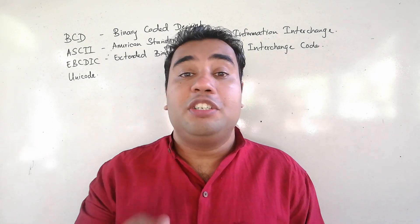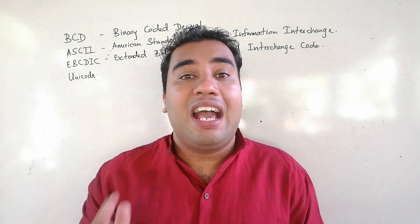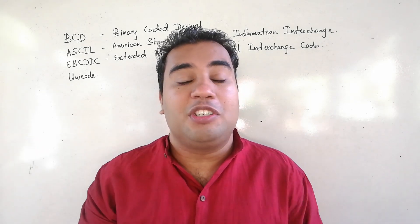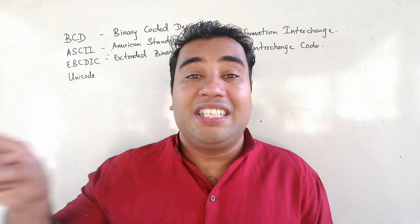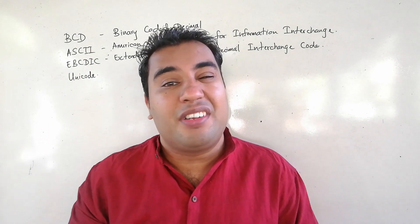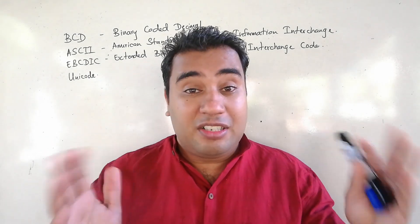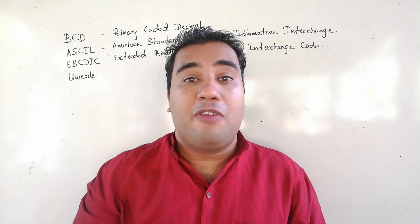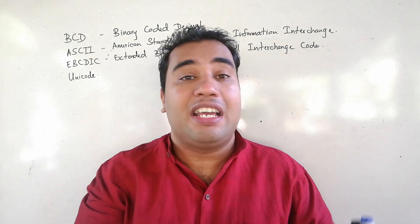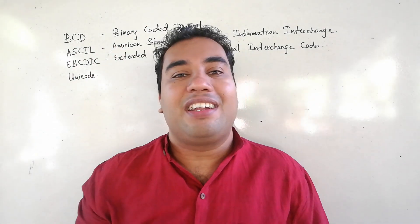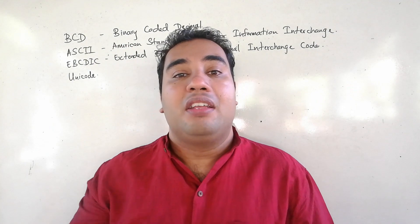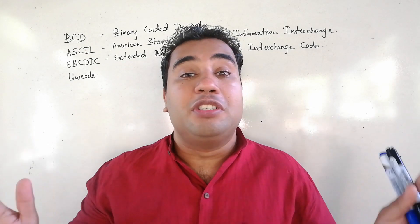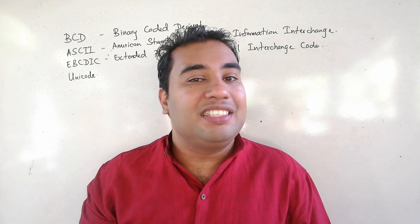Unicode is a universal coding system because it uses 16 bits to represent a character. How many characters can be represented? 2 to the power of 16, which equals 65,536 different characters. Using Unicode you can represent whatever character comes to mind in whatever language — whether it is English, Sinhala, Tamil, or Japanese. That is why we call it a universal coding system. It uses 16 bits to represent a character inside a computer.